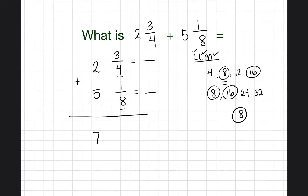We set each fraction equal to another fraction with a denominator of eight. For three-fourths: four times two equals eight, so whatever we do to the denominator we do to the numerator — three times two is six, giving us six over eight. For one-eighth, it already has a denominator of eight, so it stays as one over eight.